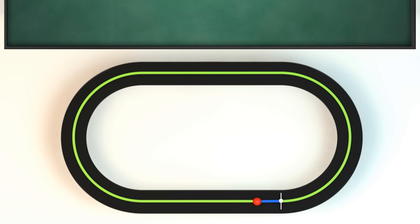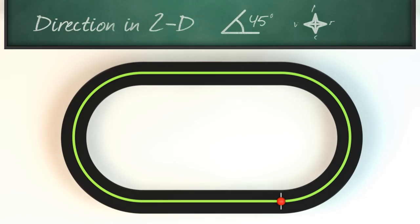In one dimension we usually just keep track of the direction of the displacement with a positive or a negative sign. In two dimensions we can use angles, compass directions, and more.